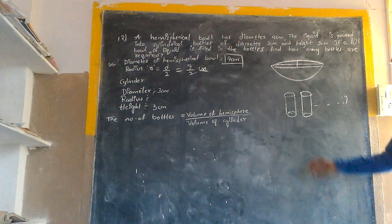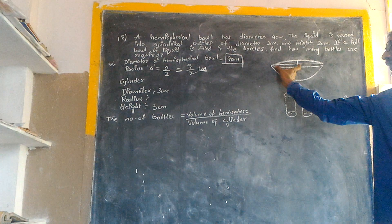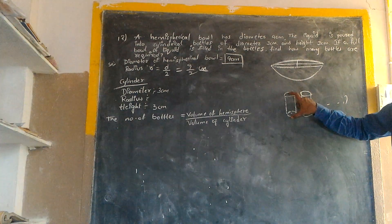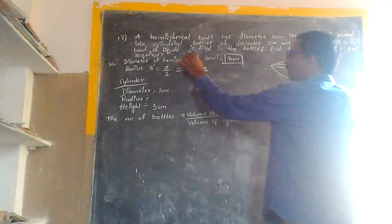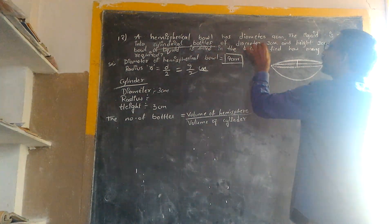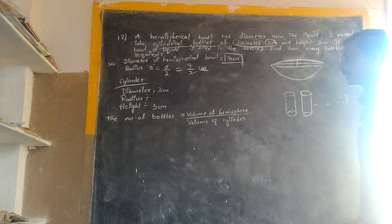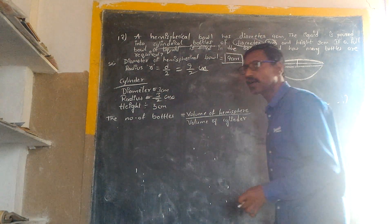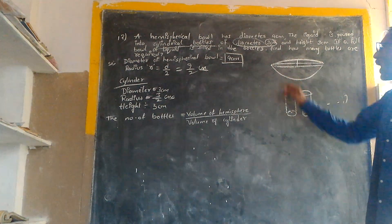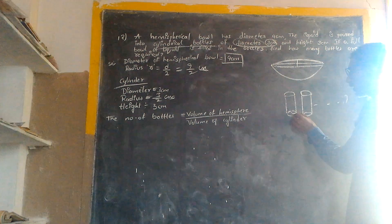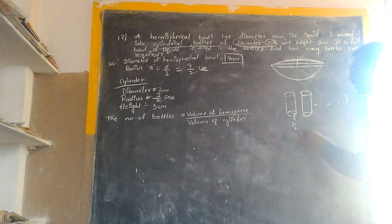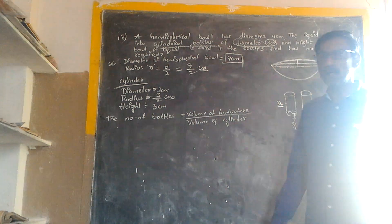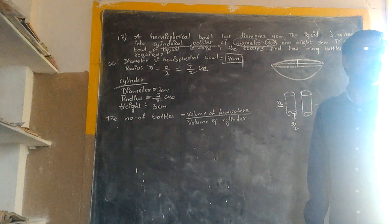Now we will find out — it is very simple. You have diameter 9 centimeters, radius 9 by 2. The cylindrical bottle has diameter 3 cm, radius 3 by 2 cm, and height 3 cm. The number of bottles is directly equal to the volume of the hemisphere divided by the volume of the cylinder.